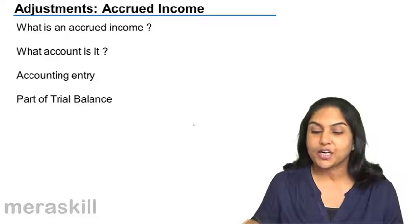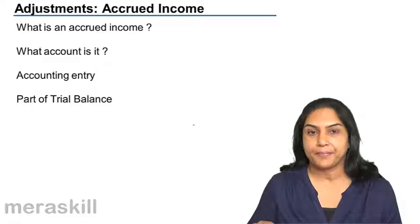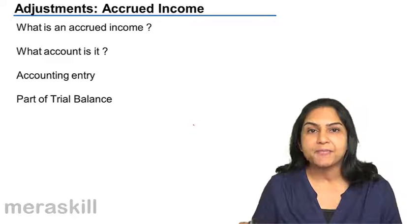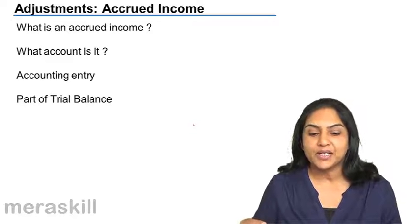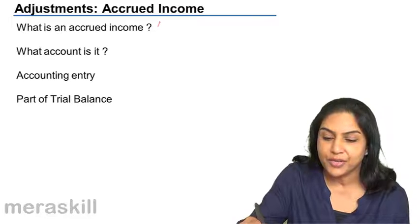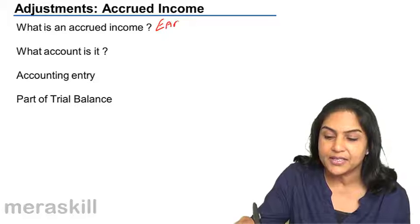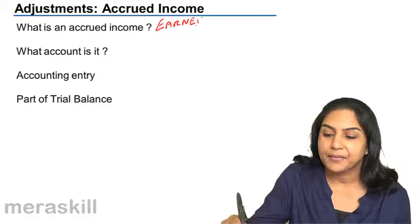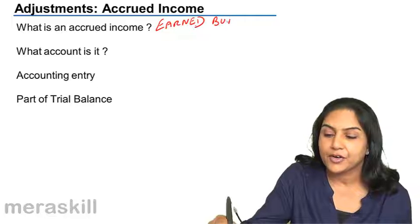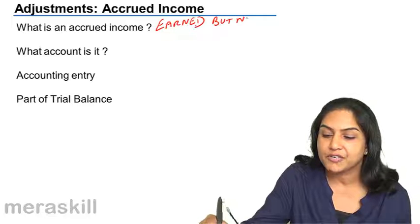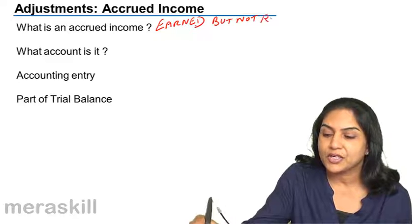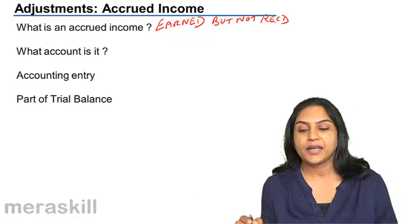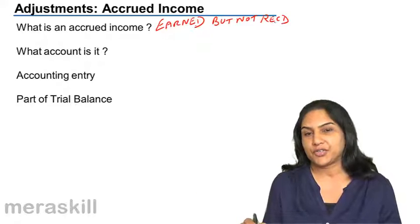Next adjustment: accrued income. What is accrued income? Income which has been earned but not received.